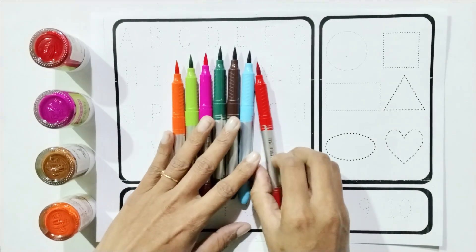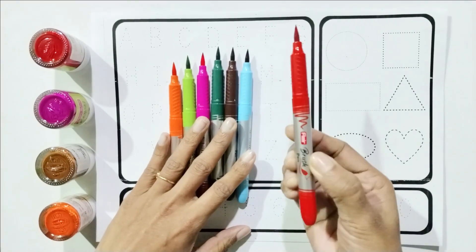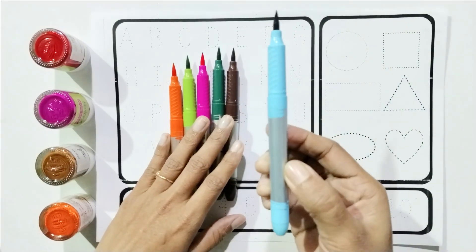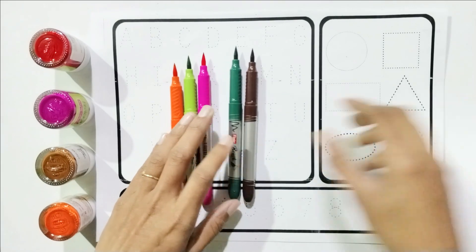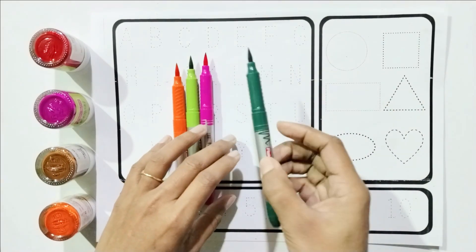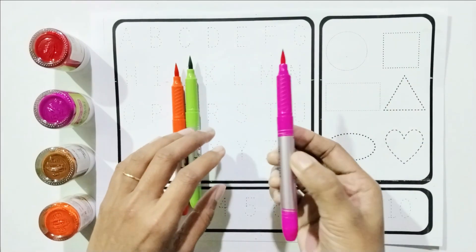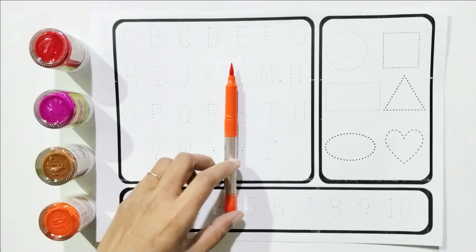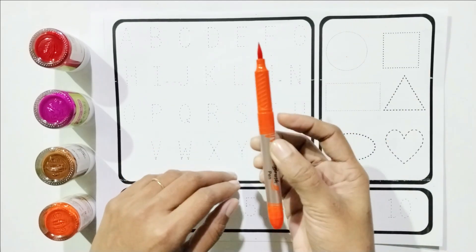Say with me colors name: red, sky blue, brown, green, pink, light green, orange.